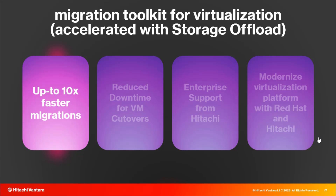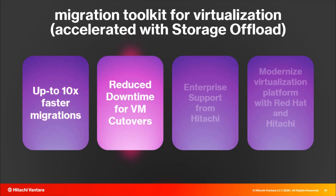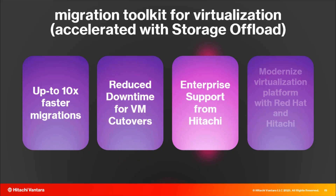To summarize, the accelerated migration with storage offload delivers up to 10x faster migrations depending on your configuration. It also enables customers to do quicker cutover to the new environment, with support for both cold migration and warm migration. We can quickly get those VMs up and operational on the target OpenShift virtualization cluster, minimizing business disruption. Hitachi is supporting version 2.9 for our customers, and we continue to encourage customers to invest in OpenShift virtualization with both Red Hat and Hitachi. Thank you very much.